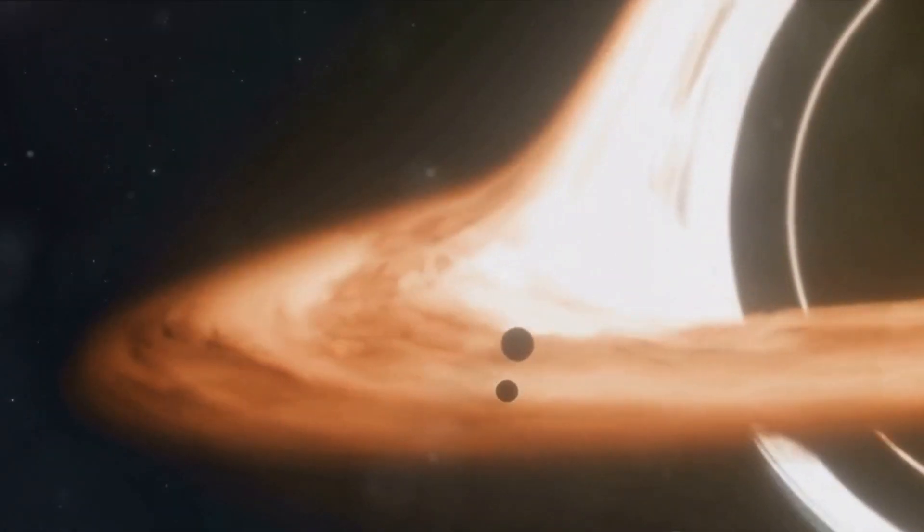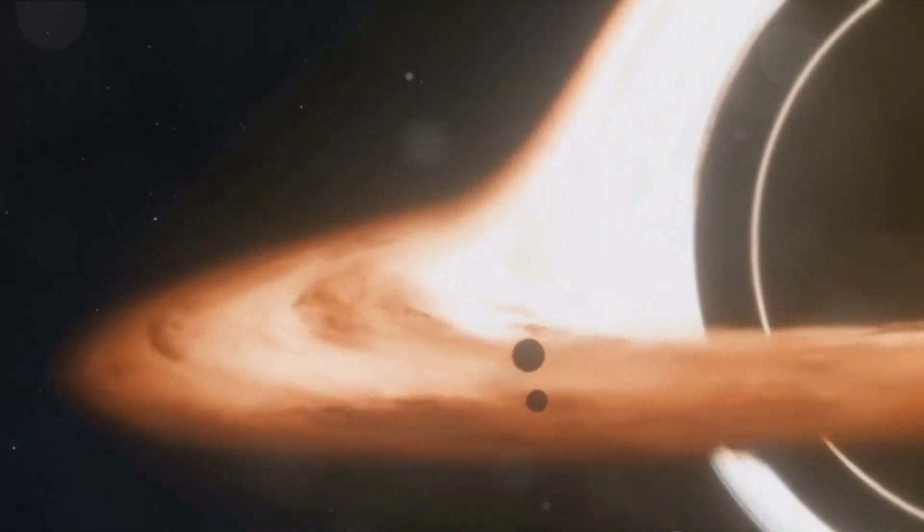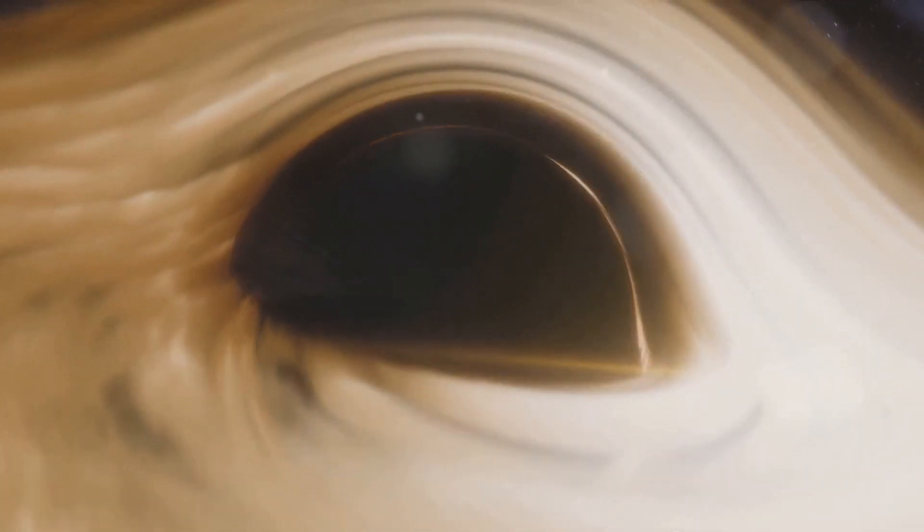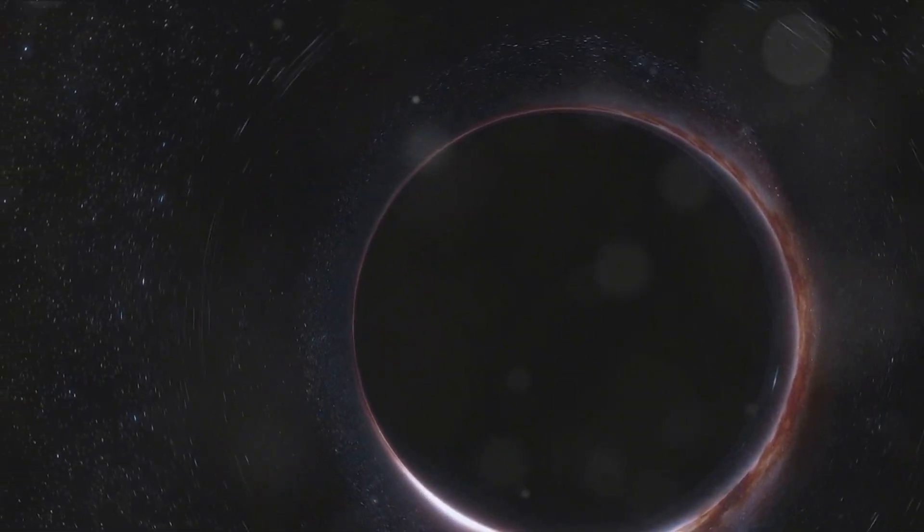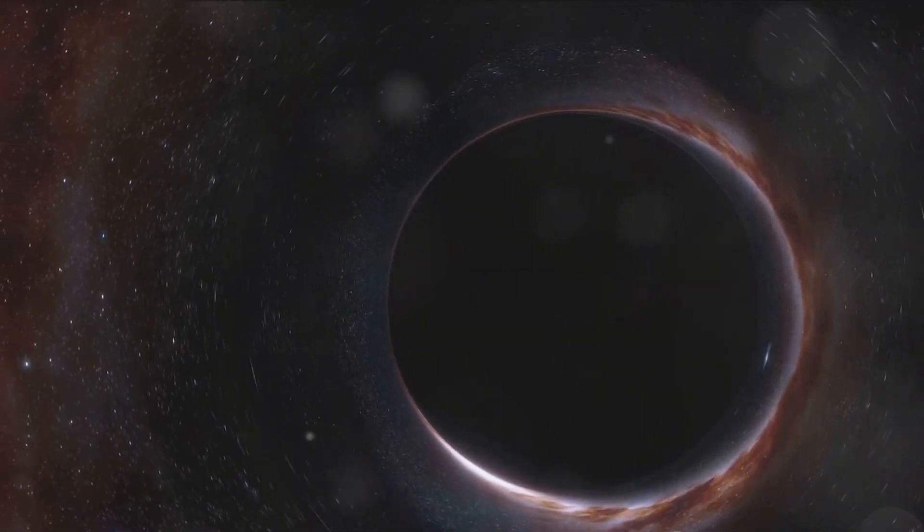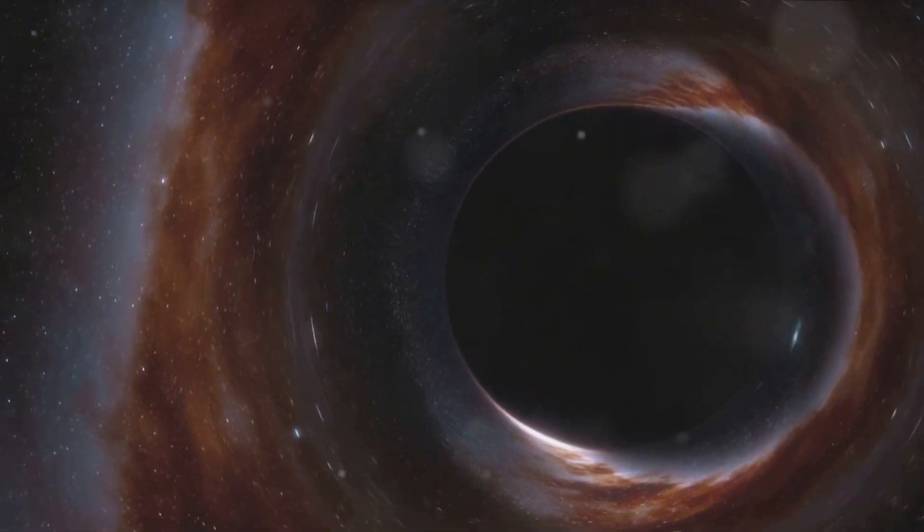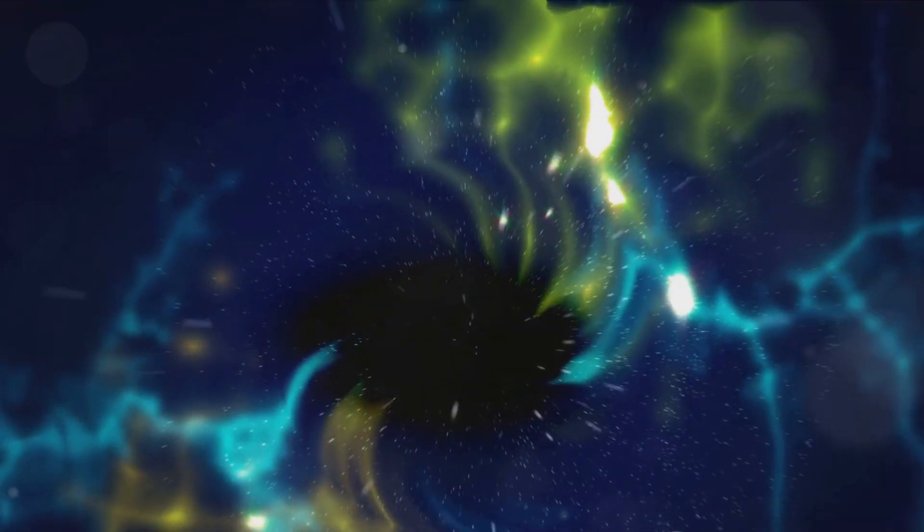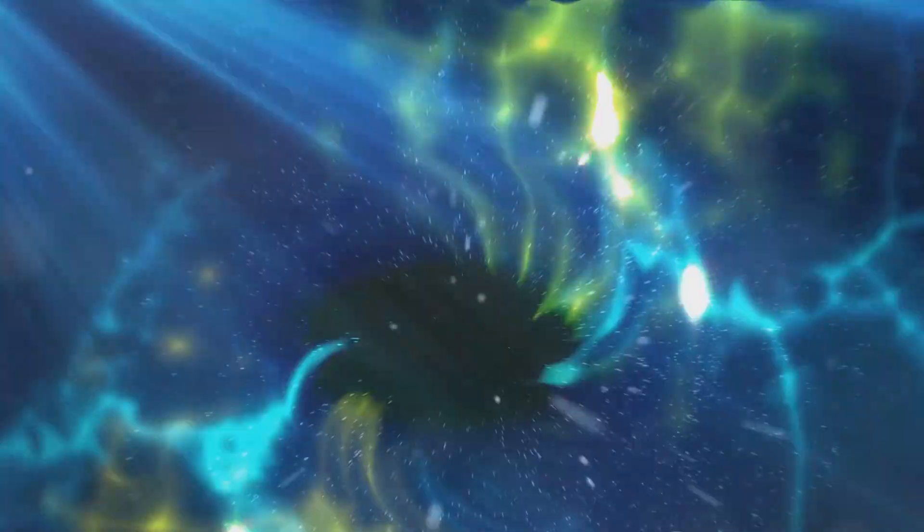Crossing the event horizon marks a point of no return. This is where things get especially interesting. The event horizon is a theoretical boundary that surrounds a black hole. It's a point beyond which nothing, not even light, can escape the black hole's overwhelming gravitational pull. Imagine it as the ultimate border, a one-way door to an unknown realm.